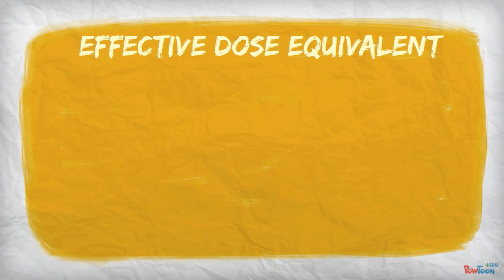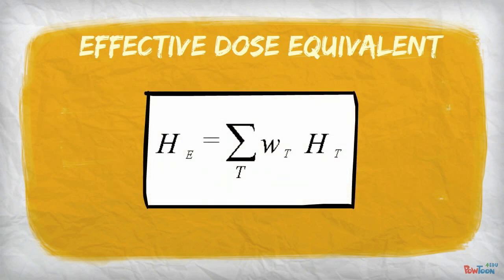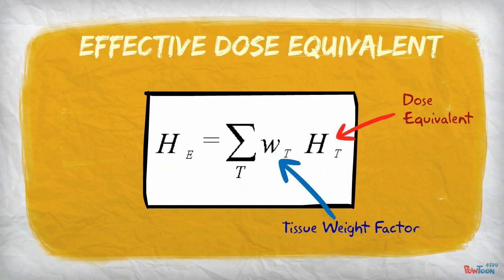To calculate the effective dose equivalent, we take the sum of the dose equivalent times the weight factor for each tissue or organ that receives radiation. The equation will often appear in this form, where Ht is the dose equivalent and Wt is the tissue weight factor.